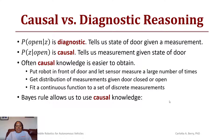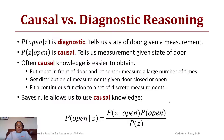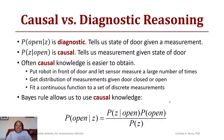Bayes' rule allows you to use this causal knowledge, continuing our discussion of the Bayes formula from the previous lecture. Given that I have a measurement, what is the probability that the door is open? It may be easier to find: given that the door is open, what is my sensor measurement? Then we multiply that by the probability of the door being open over the probability of that sensor measurement.